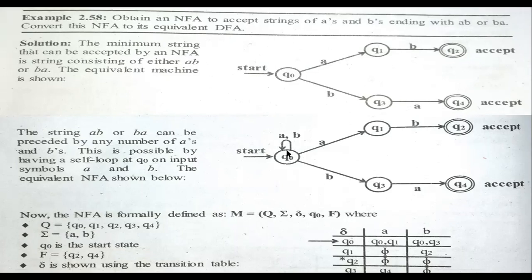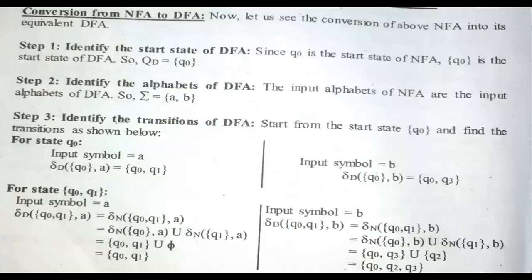For the NFA: for path AB we go one way, for B another way. Initially any combination of a and b may appear, so Q0 has a self-loop. Q0 has multiple transitions for a and for b, confirming it is an NFA. The states are Q0 through Q4, alphabets a and b, start state Q0, final states Q0 and Q4.